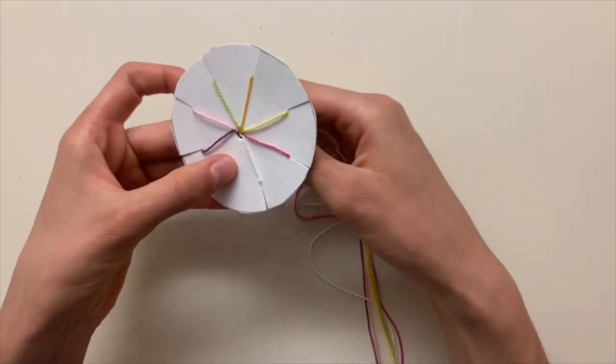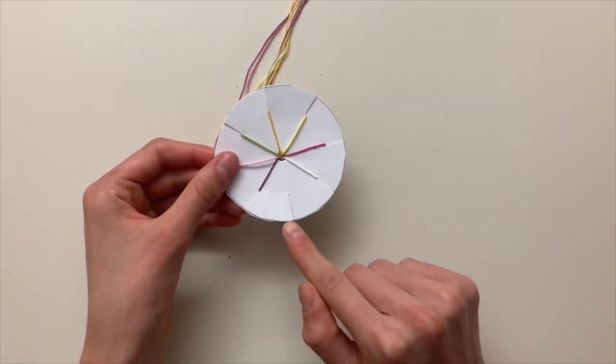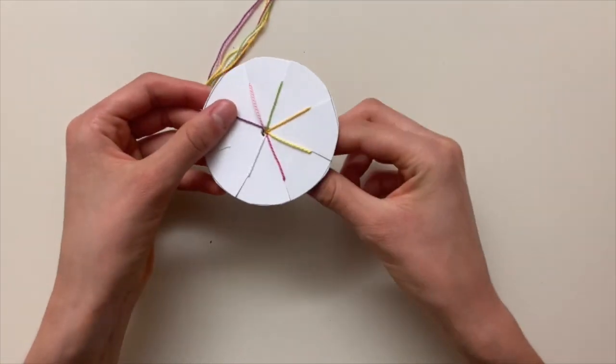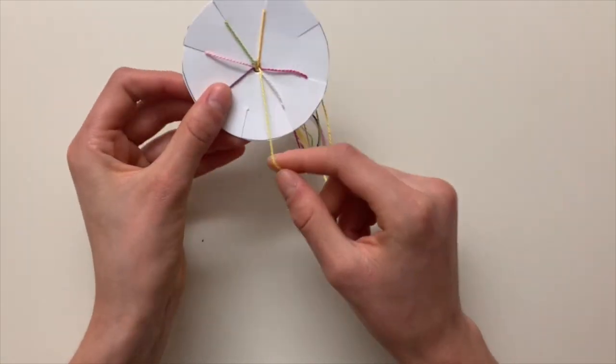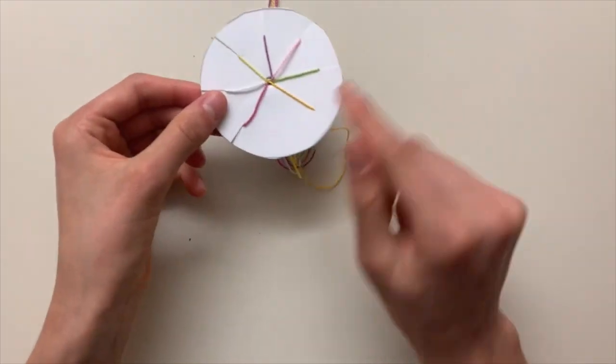Now it's time to start making the bracelet. Once all seven strings are threaded, count three slits to the right from the blank slit. Take this third string out of the slit and thread it through the blank slit. Now you'll have a new blank slot where I'm pointing.